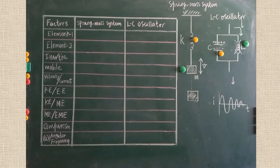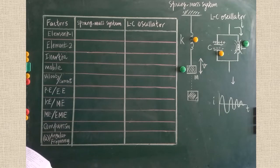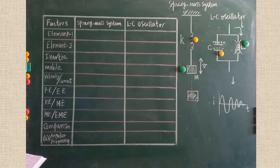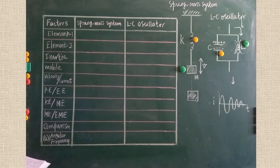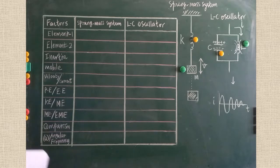In chapter 4, page number 261, there is question number 26. I will read the question: compare the electromagnetic oscillations of LC circuit with the mechanical oscillations of block-spring system qualitatively to find the expression for angular frequency of LC oscillator. Such a question is given in page number 261. Now we are going to analyze both the two oscillations.